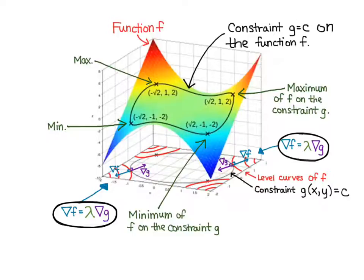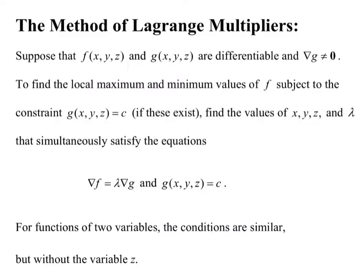Hopefully that visual helped solidify why we can use the system of equations gradient of f equals lambda times gradient of g. To apply Lagrange multipliers, we set up a system of equations: gradient of f equals lambda times gradient of g, and the constraint g of xy equals c, or g of xyz equals c.